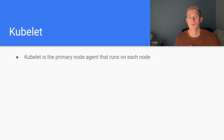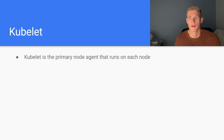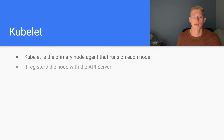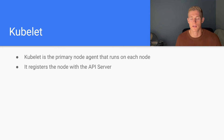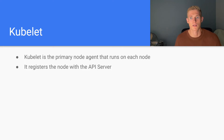Kubelet is the primary node agent that runs on each node. It essentially provides all of the administrative actions that are required to run a node within a Kubernetes cluster. It registers the node with the API server, so when we spin up a new node, kubelet is the process responsible for setting up the node within the cluster, ensuring the cluster is aware that the node exists and everything is configured correctly so that the node can be a functional member of the cluster.